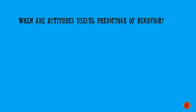What I'm about to tell you is based on the results of hundreds of studies over a very long period of time. First of all, attitudes are better predictors of behavior when they're very strong or stable. Think of all the attitudes that you hold — some of them you've held for a very long time and are unlikely to ever change. They're very powerful and part of who you are. Those attitudes are going to be more useful at predicting your behavior than attitudes that haven't been held as long or that you don't feel as strongly about. So strong, stable attitudes are better predictors of behavior than weaker, more unstable attitudes.